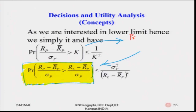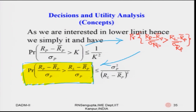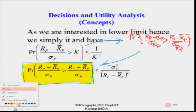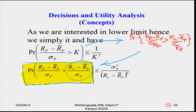The equation I am pointing to is (R_p − R̄_p) / σ(R_p), and we are replacing this quantity with k. This means the value of k is known to you, given that the standard deviation and the values of R_L and R̄_p are known.